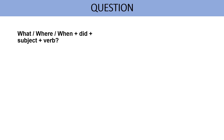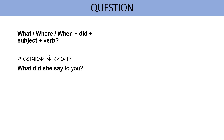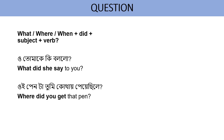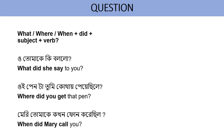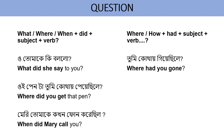More question examples using WH-words. 'What', 'where', 'when' can be combined with 'did' or 'had', followed by subject and verb. ও তোমাকে কী বলল? — What did she say to you? 'What' comes first, then 'did', then 'she' (subject), then verb 'say'. মেরি তোমাকে কখন ফোন করেছিল? — When did Mary call you? 'When' first, then 'did', then 'Mary' (subject), then verb 'call'. তুমি কোথায় গিয়েছিলে? — Where had you gone? এটা কীভাবে হয়েছিল? — How had it happened?